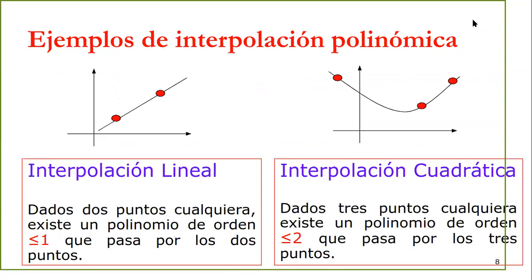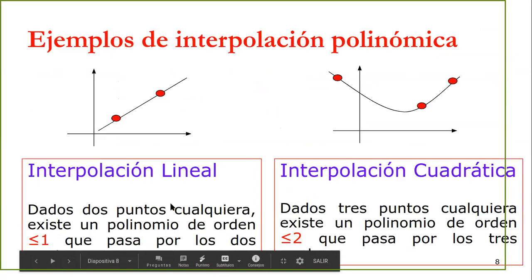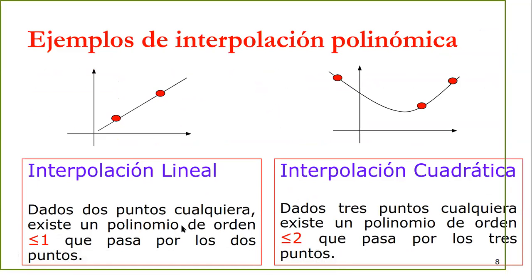Para la interpolación lineal, a partir de 2 puntos podemos estimar el polinomio de orden 1 que pasa por esos 2 puntos. Para esa interpolación lineal necesitamos 2 puntos. Para la interpolación cuadrática, que es de orden 2, vamos a necesitar 3 puntos, y el polinomio será una única curva que pasa precisamente por esos 3 puntos.